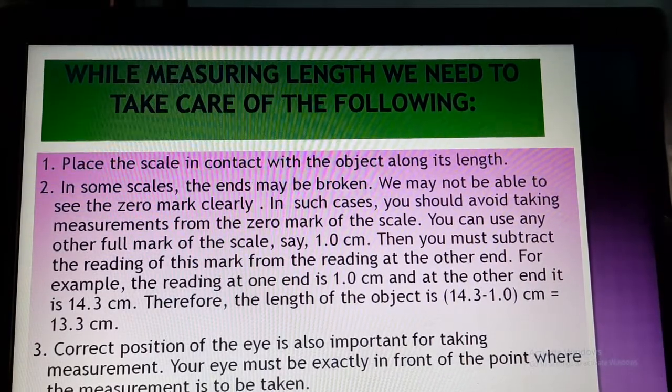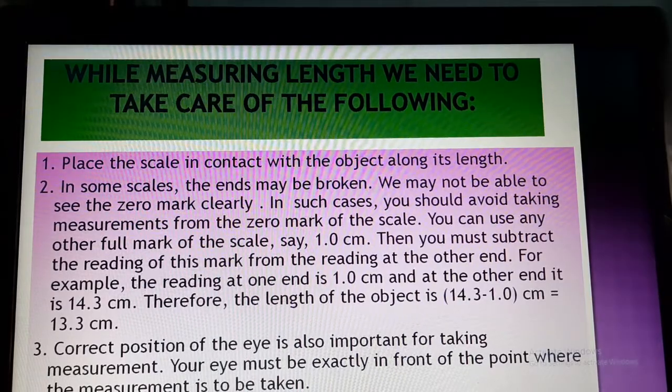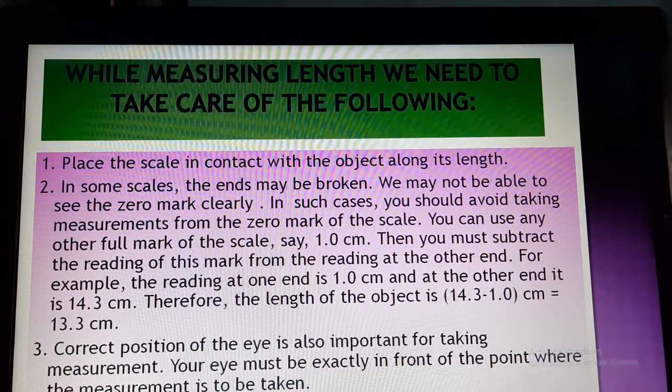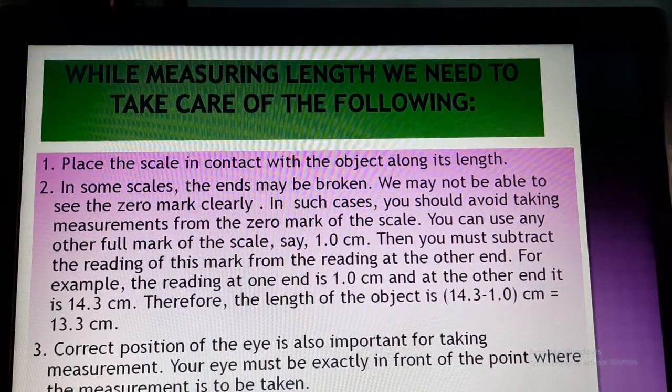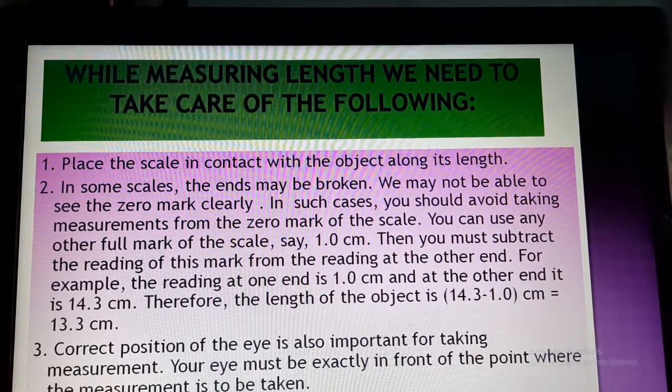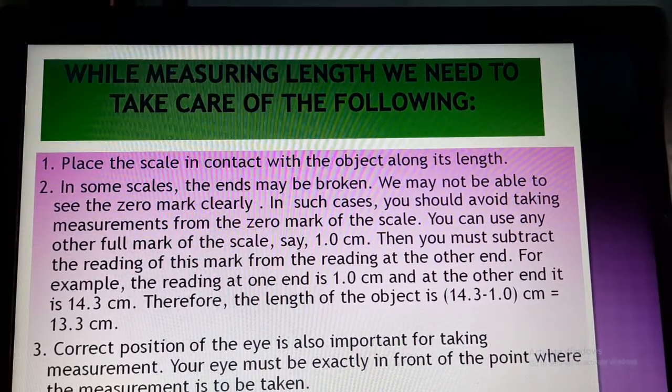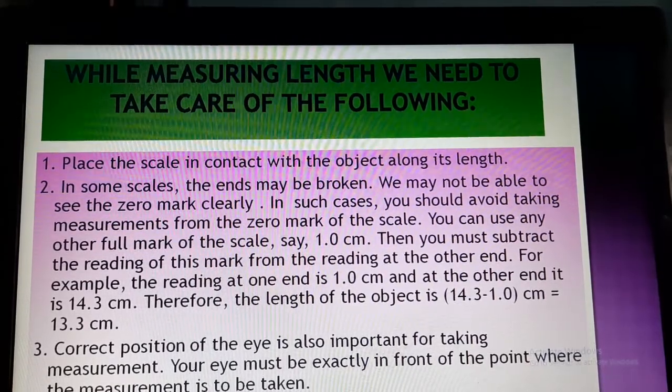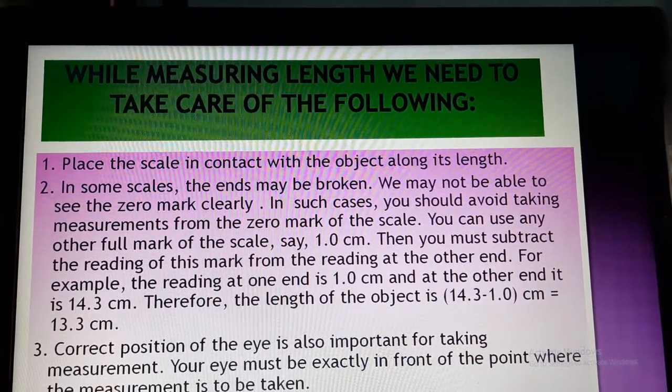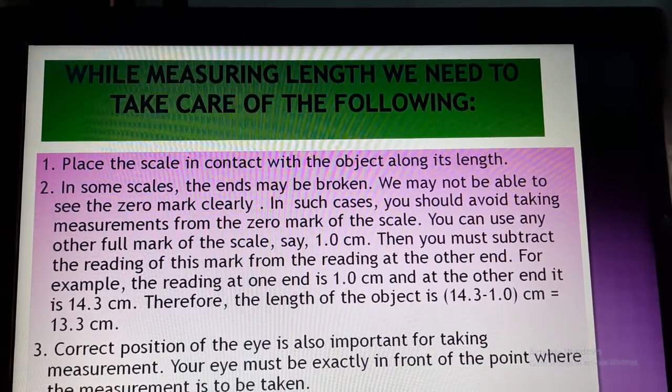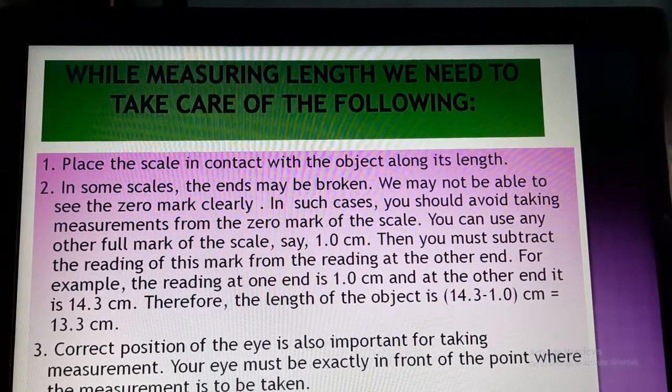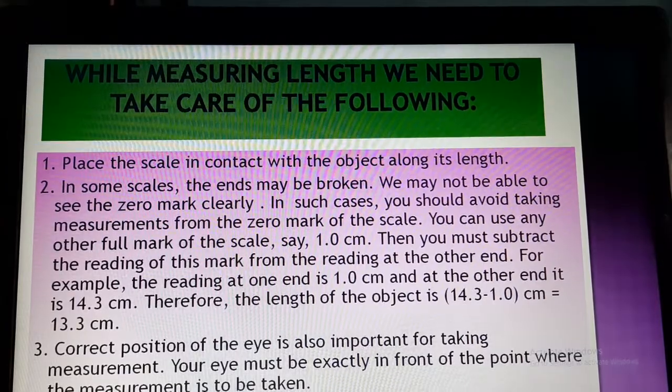Now the second point is optional. If the scale is broken, then only we have to do this subtraction part. Suppose if I am starting the measurement from 1 cm, then at the end whatever measurement I am getting, suppose here I have given an example 14.3 cm, so I am subtracting 1 cm from that. But if the scale has no broken portion and I am starting the measurement from 0, then there is no need of this kind of subtraction procedure.